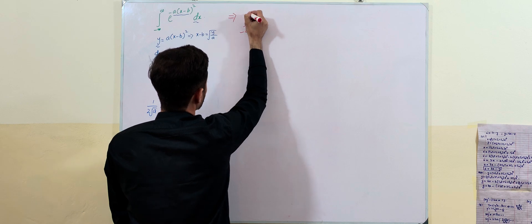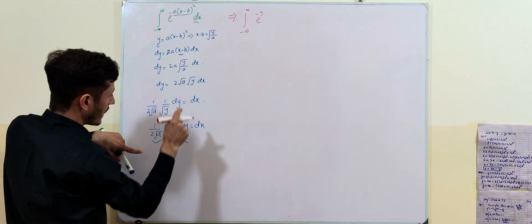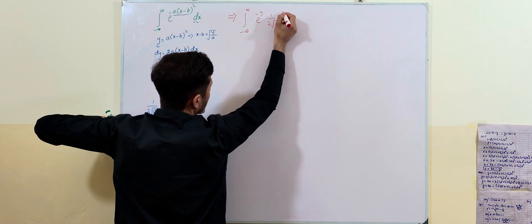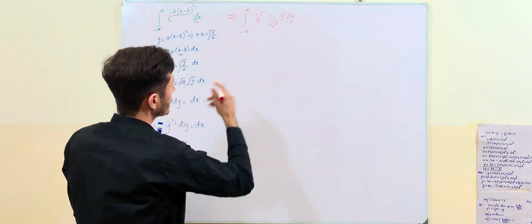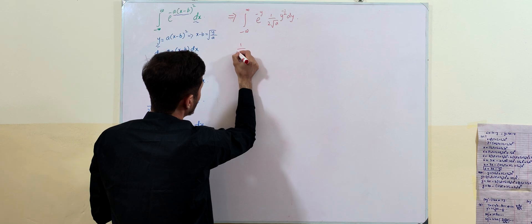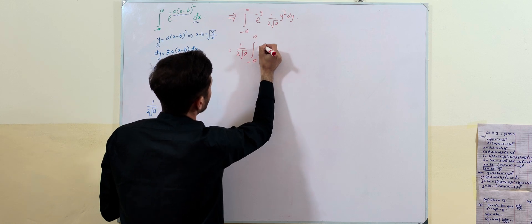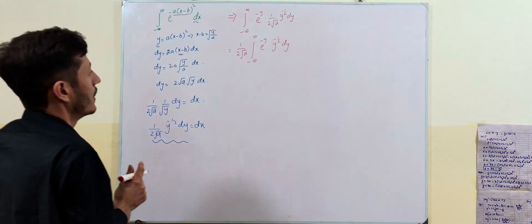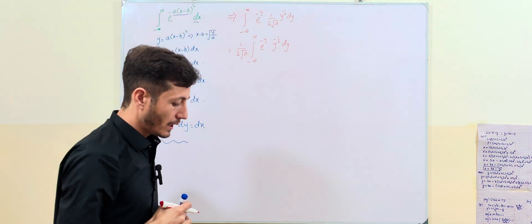The integral from minus infinity to infinity of e to the power of minus y, with dx replaced by (1 divided by 2 times square root of a) times y to the power of minus 1/2, dy. The constant comes out, giving (1 divided by 2 square root of a) times the integral from minus infinity to infinity of e to the minus y times y to the minus 1/2, dy.